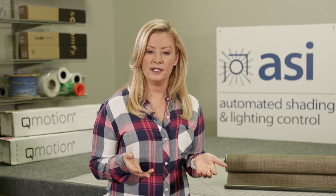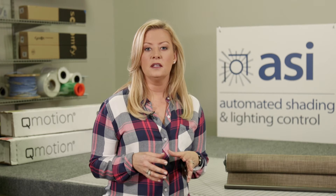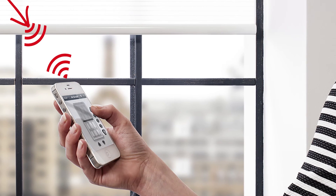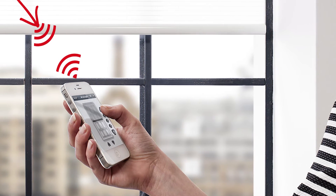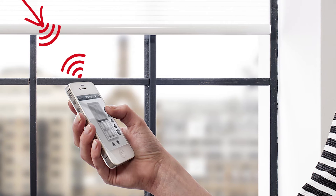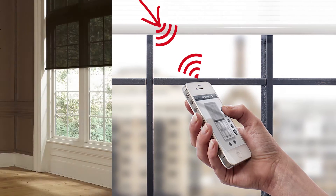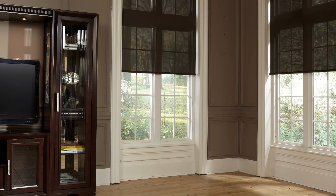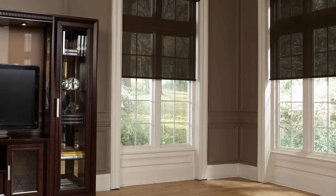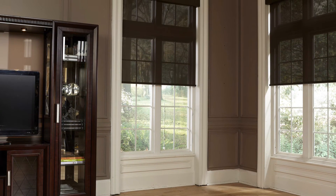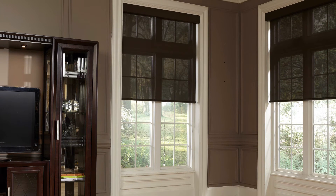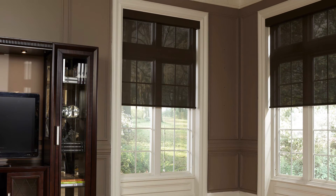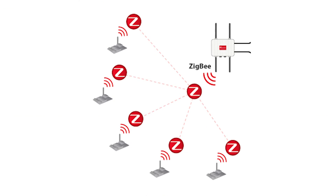What does this mean? Simply put, Zigbee provides two-way communication between the shade and controller. While the standard Q-Motion shades are created to wake up at set intervals in order to control battery usage, by utilizing the Zigbee technology,